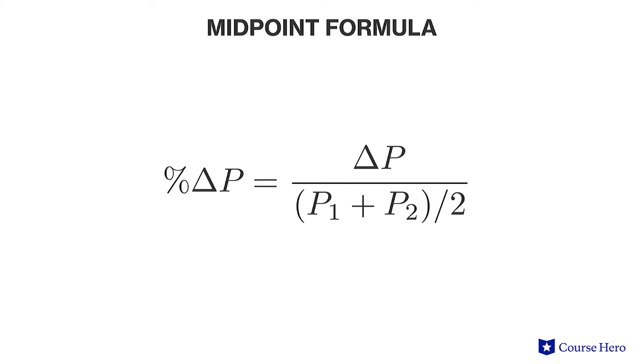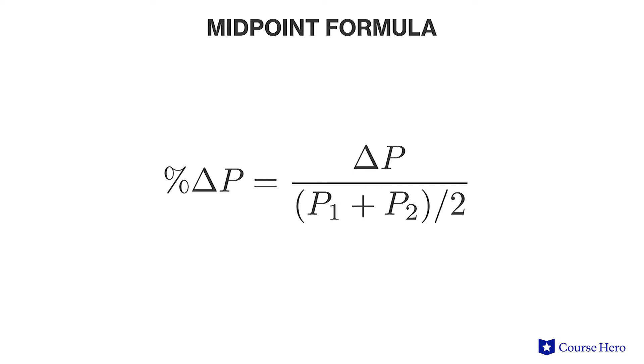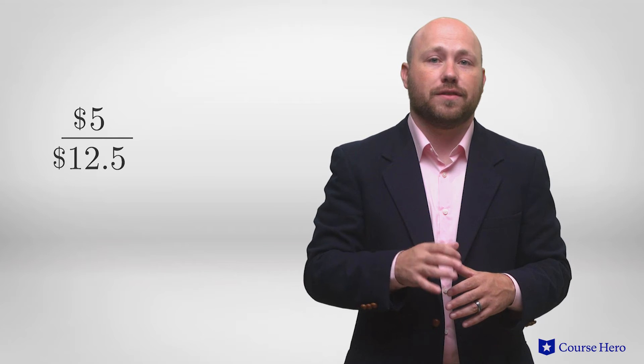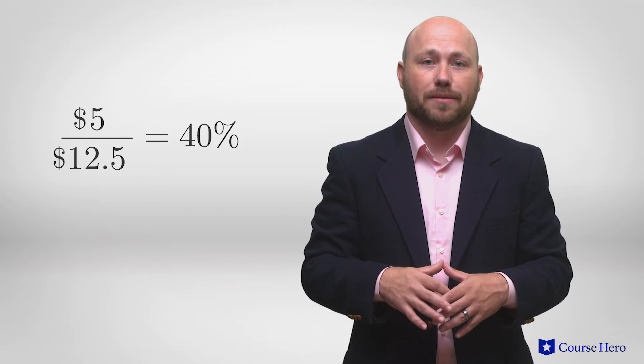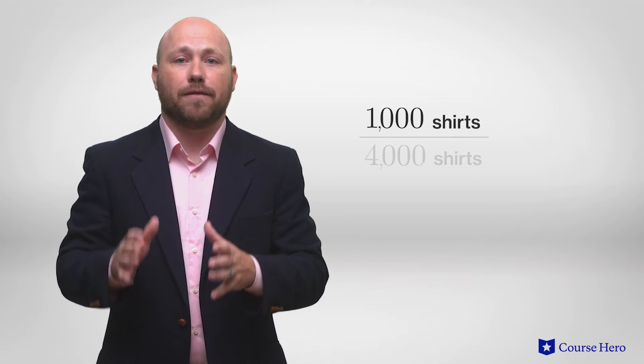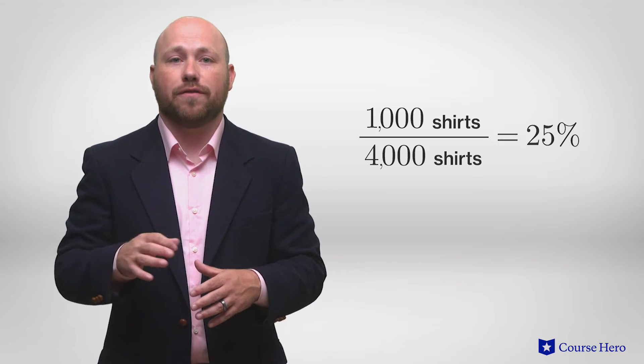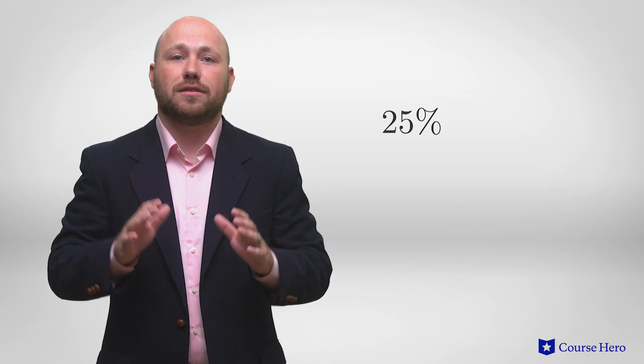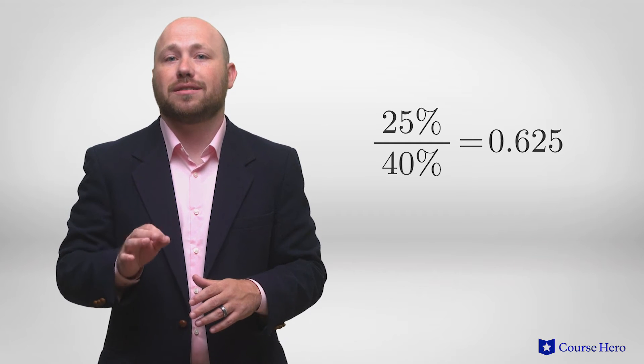Using the midpoint formula, the change in each variable is divided by the average of the original and new values. The percentage change in price is $5 divided by $12.50, which equals 40%. The percentage change in quantity demanded is 1,000 shirts divided by 4,000 shirts, which equals 25%. The price elasticity of demand is then calculated as 25% divided by 40%, giving an elasticity of 0.625.